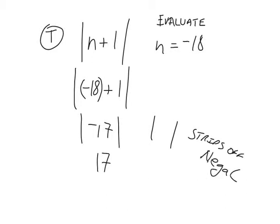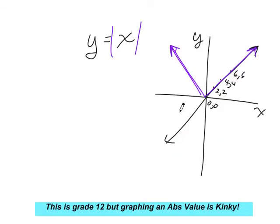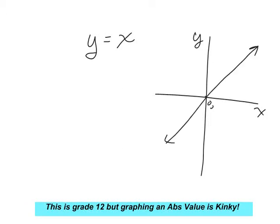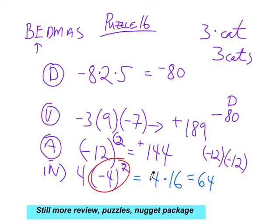When you graph an absolute value, we'll do this in grade 12, but it takes a line and just instantly bends it — it gets kind of kinky. That's not a parabola. Parabolas aren't kinky — they don't have a sharp bend. Parabolas are nice smooth curves. Mother nature doesn't do kinky bends like that.